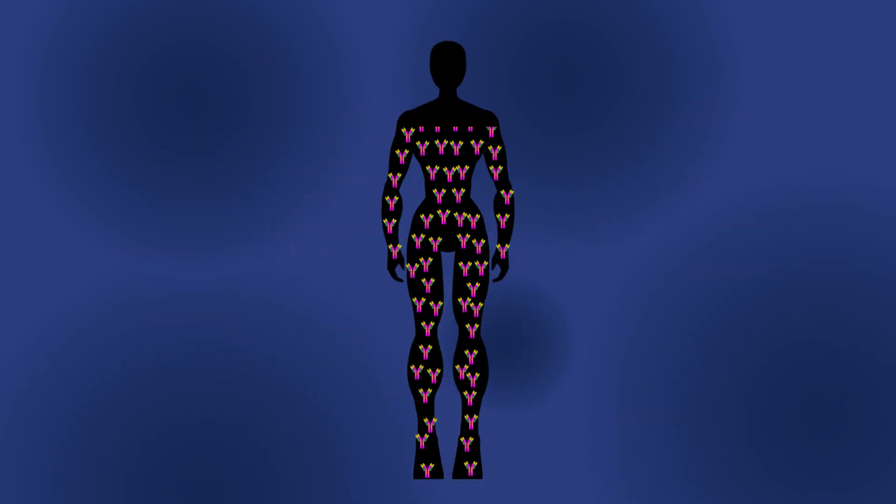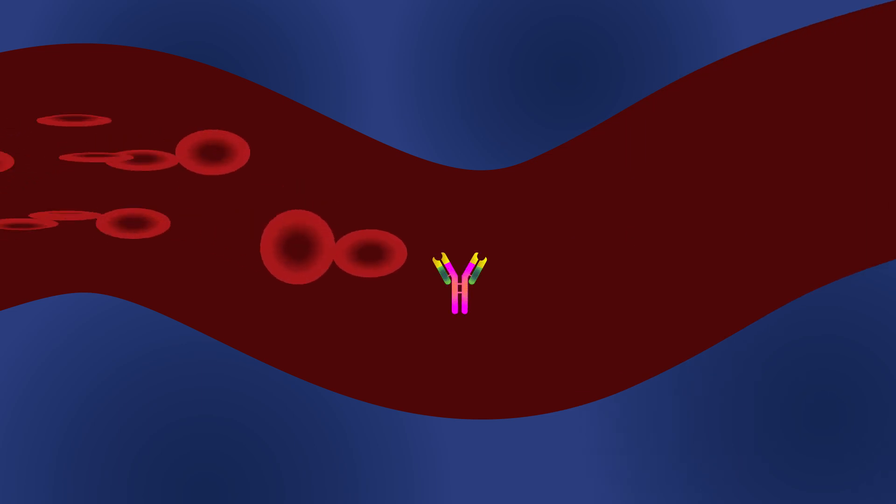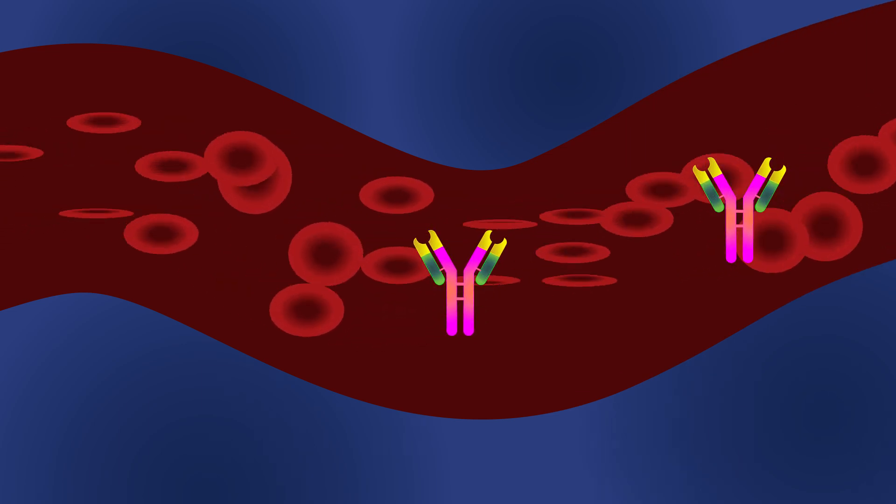If a person doesn't produce or overproduces antibodies in the body, the person will become very ill. So where do antibodies come from? Antibodies circulate in the bloodstream and can appear anywhere throughout the body.